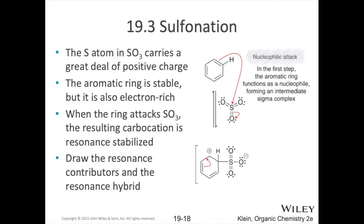Having that partial positive charge on there allows a nucleophilic attack from that benzene ring, just like we saw in our previous halogenation examples. We can draw a curly arrow going from our double bond to that sulfur. Here we can see the sigma complex that's formed, with a sulfonate group attached. This is resonance-stabilized and is going to be a pretty stable carbocation because of that resonance stabilization.